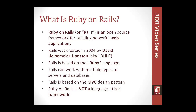Rails was created in 2004 by David Heinemeier Hansson, also known as DHH among geeks. He created Ruby on Rails in 2004, and the Ruby language was created in 1993 — so Rails came about 10 years later. As I said, it's based on the Ruby language.